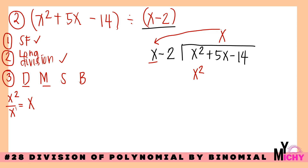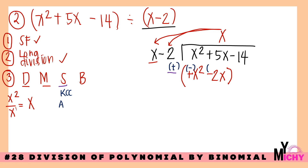Continue multiplying using the distributive property: x times negative 2 equals negative 2x. Write x squared minus 2x in parentheses below. Subtract using KCC: positive x squared becomes negative, positive 2x becomes positive. x squared and negative x squared cancel to 0. Then 5x plus positive 2x: both positive, giving 7x. Bring down negative 14.